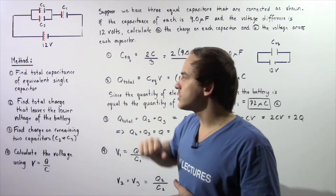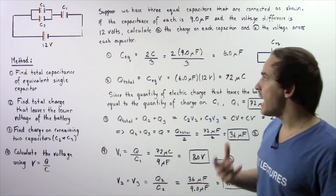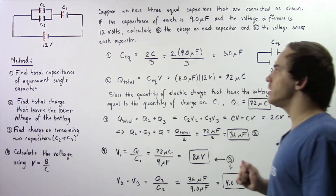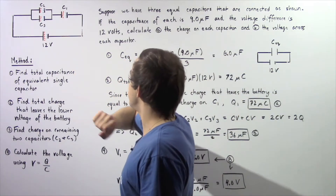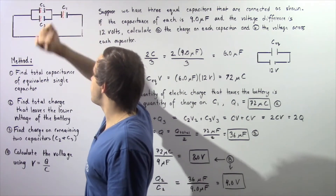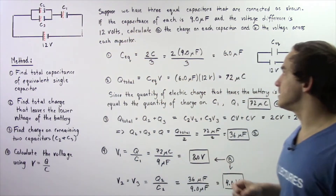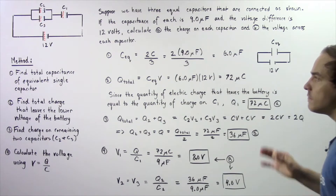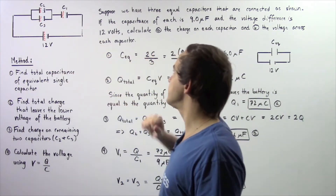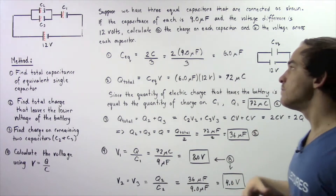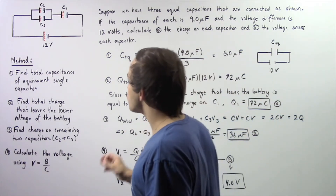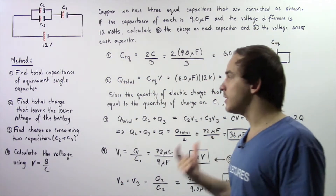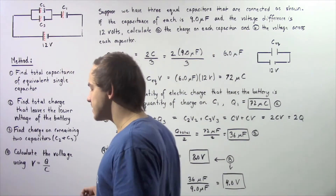Let's examine the following electric circuit composed of three capacitors connected to one another as shown in the diagram. We have capacitor 1, capacitor 2, and capacitor 3. The capacitance of each one is equal to 9 microfarads and the voltage difference across the battery is 12 volts. We want to calculate the electric charge stored on each capacitor and the voltage difference across each one.